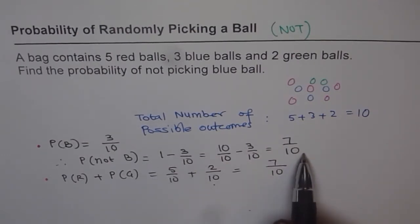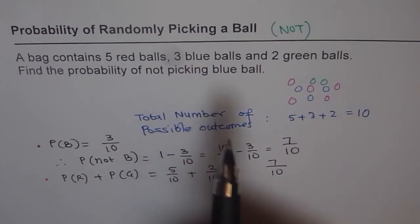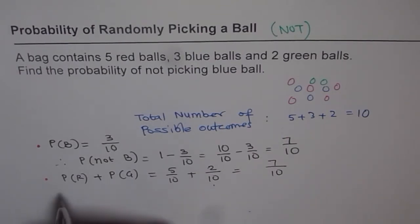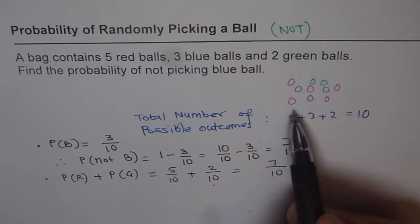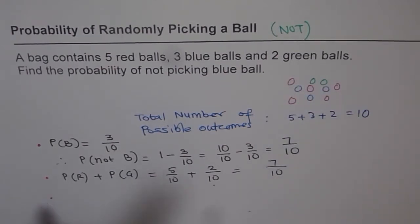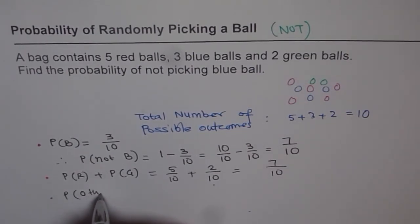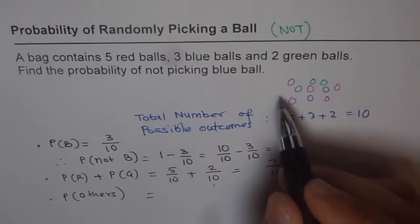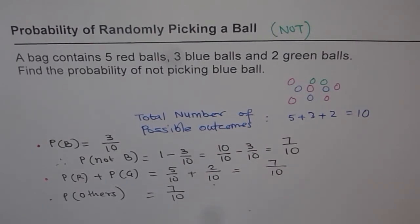So we know that we can find the solution to these questions in two different ways. To find probability of not picking means one minus the probability of picking, because total sum is always one. That is one good approach. The second is: if you don't pick blue, what are you going to pick? All others. So how many balls are not blue? Only three are blue, so all others are seven — giving seven over ten. That is another way of getting the same answer.